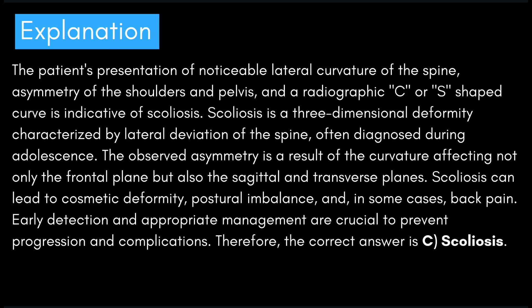The patient's presentation of a noticeable lateral curvature of the spine, asymmetry of the shoulders and pelvis, and a radiographic C or S-shaped curve is indicative of scoliosis. Scoliosis is a three-dimensional deformity characterized by lateral deviation of the spine, often diagnosed during adolescence. The curvature affects not only the frontal plane but also the sagittal and transverse planes, potentially leading to cosmetic deformity, postural imbalance, and back pain. The correct answer is C, scoliosis.